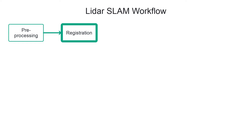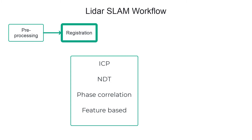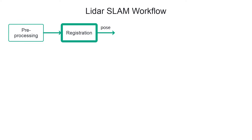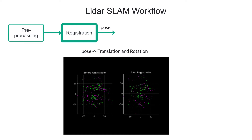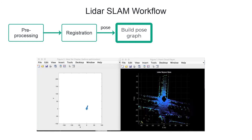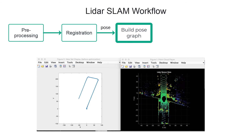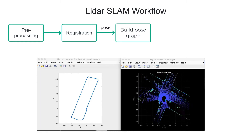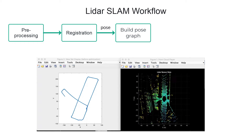The next step is to register two point clouds to estimate the relative motion between them. We have many methods for registration such as ICP, NDT, phase correlation, and feature-based methods. The output of the registration process is a pose estimate, which is a composition of translation and rotation estimates. The pose estimates are then added to a pose graph, and this step of registration is done iteratively on successive point cloud frames to build this pose graph.